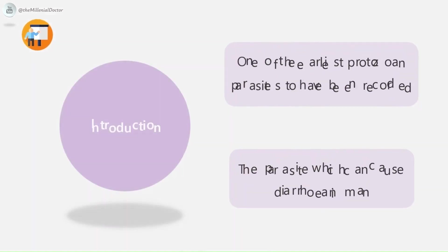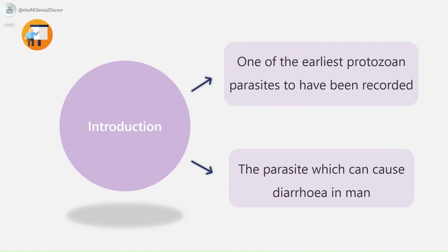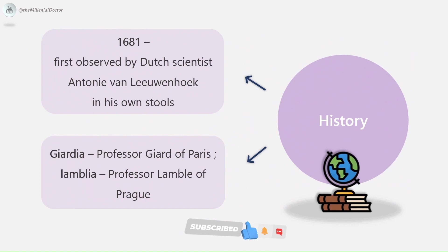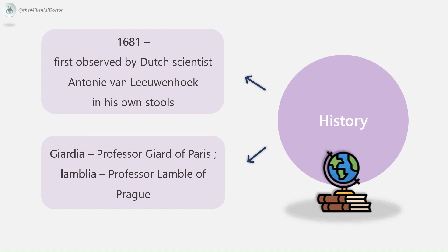Introduction to the parasite: it is one of the earliest protozoan parasites to have been recorded. Giardia lamblia can be defined as the parasite which can cause diarrhea in man. The flagellate was first observed by Dutch scientist Antony van Leeuwenhoek in the year 1681 in his own stools. It is named 'Giardia' after Professor Giard of Paris and 'lamblia' after Professor Lambl of Prague, who gave a detailed description of the parasite.